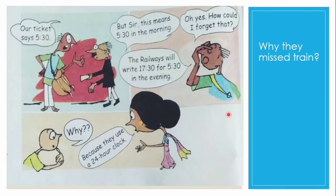They asked the station master. Father said, 'Our ticket says 5:30.' The station master said, 'But sir, this means 5:30 in the morning.' Father said, 'Oh yes, how can I forget that? The railway writes 17:30 for 5:30 in the evening.'